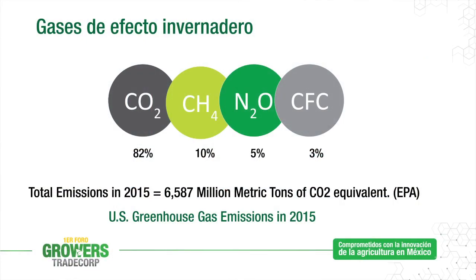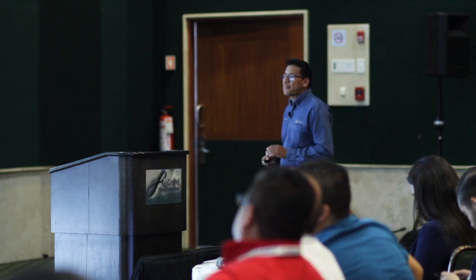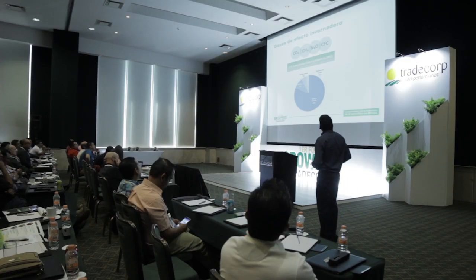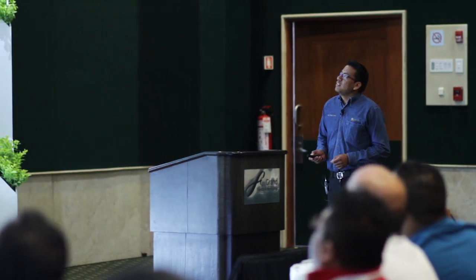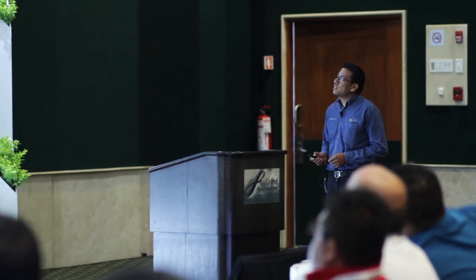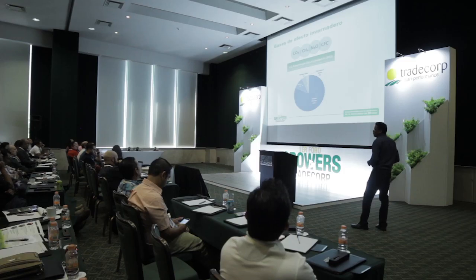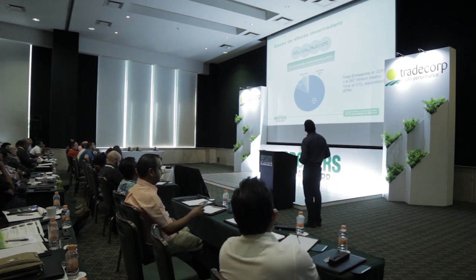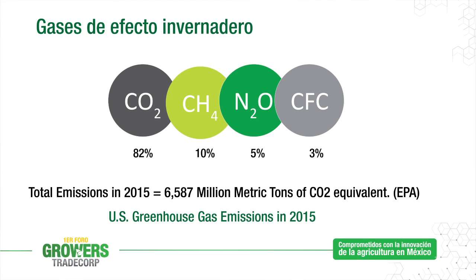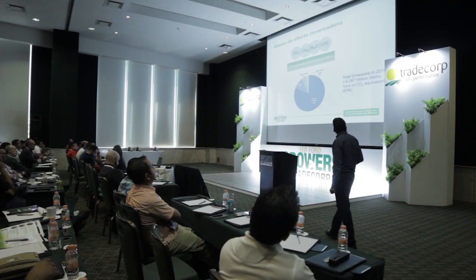Los gases de efecto invernadero principales son el dióxido de carbono, el metano, el óxido nítrico y los clorofluorocarbonos (CFC). Según datos de la EPA, la Agencia de Protección Ambiental, el dióxido de carbono representa hasta el 82% del total de gases de efecto invernadero en concentración ambiental, el metano un 10%, el óxido nítrico un 5% y el resto son los CFC. Las emisiones totales en 2015 se estiman en 6,587 millones de toneladas métricas de CO2 equivalente.